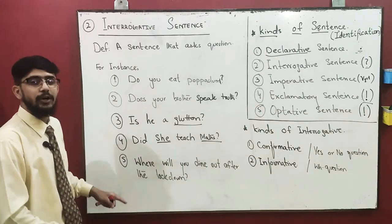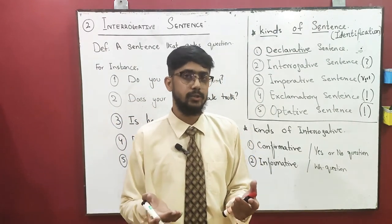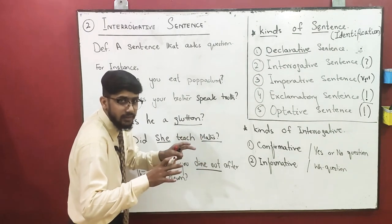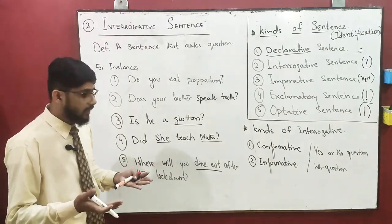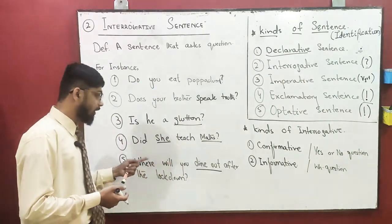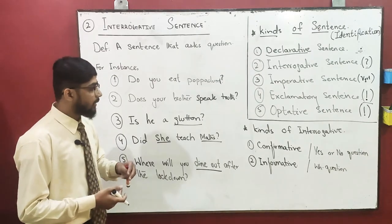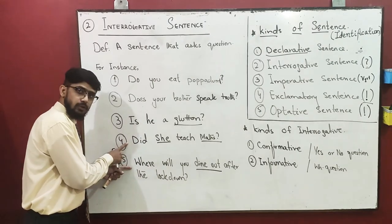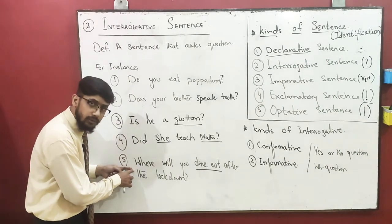The last example is: 'Where will you dine out after the lockdown?' Since we are in lockdown, we are having all classes online. 'Dine out' does not mean dying — it means bahar khana khana. After the lockdown ends, where will you go to eat outside at night? That is called dine out. There is a difference between this sentence and the previous ones — this is an informative sentence, while the earlier ones are called confirmative sentences.